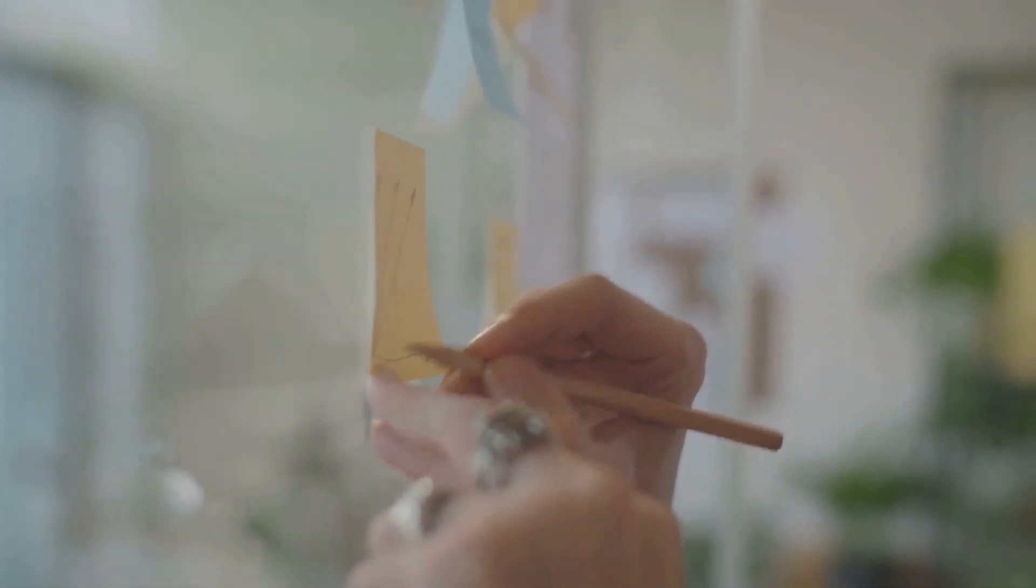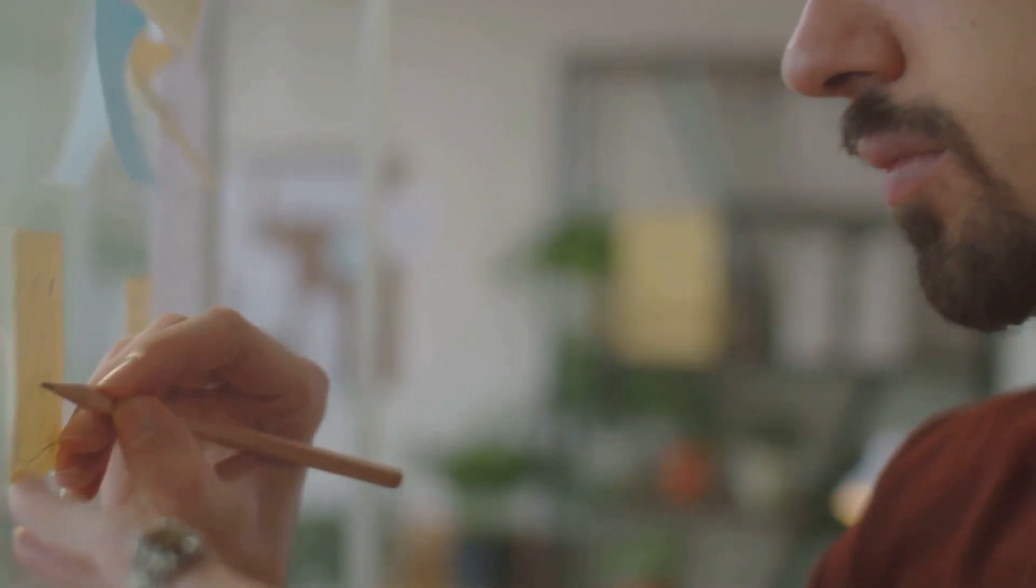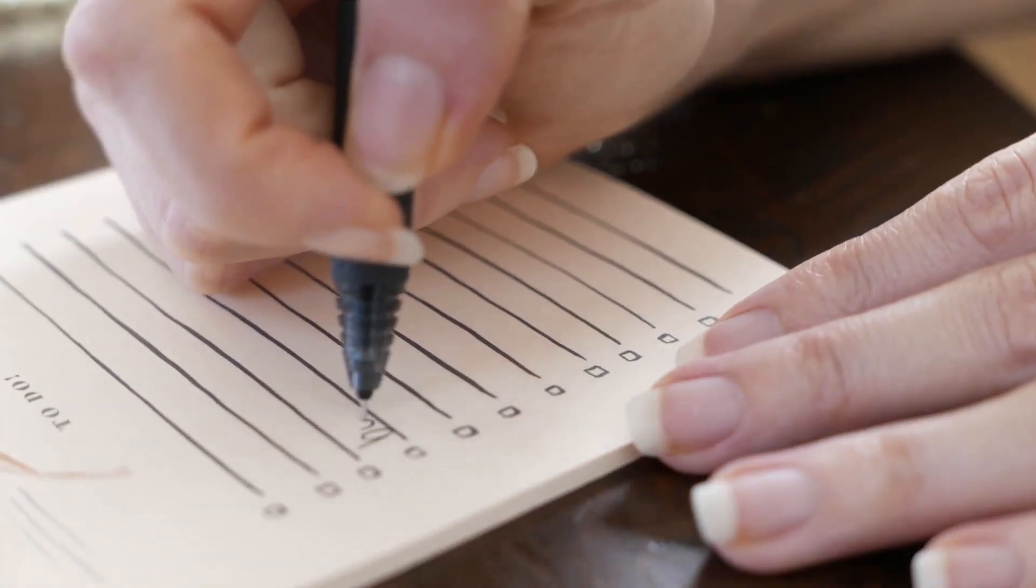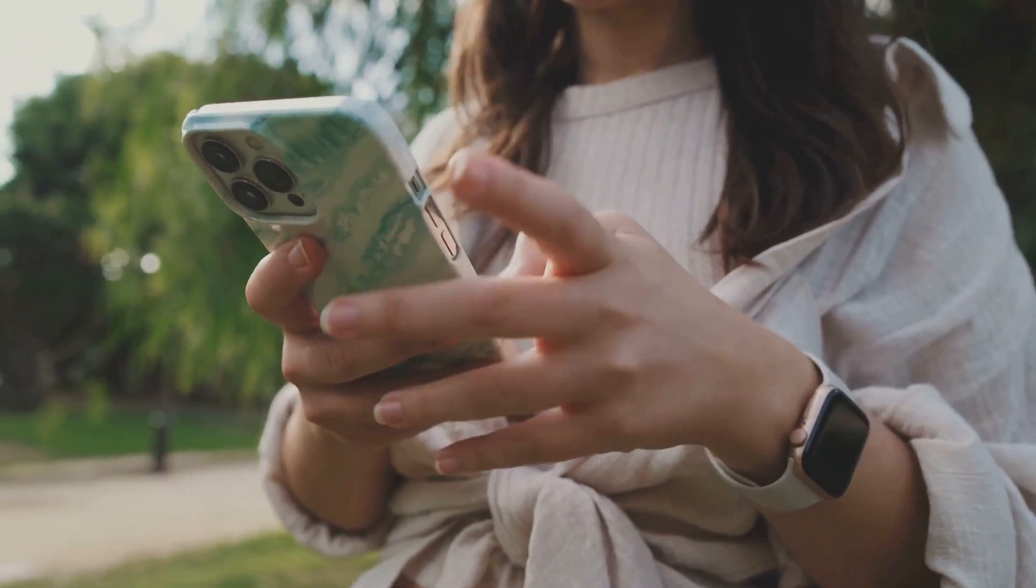A helpful method is the Eisenhower box, dividing tasks into four categories. Urgent and important. Important but not urgent. Urgent but not important. And neither urgent nor important.